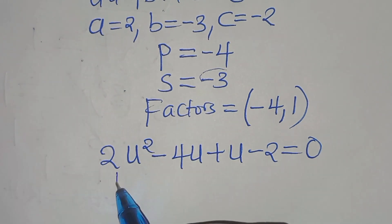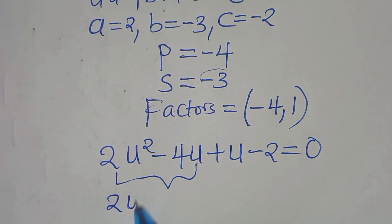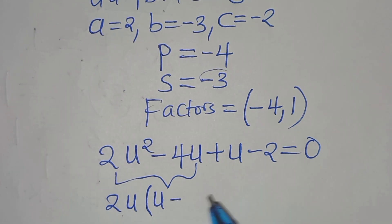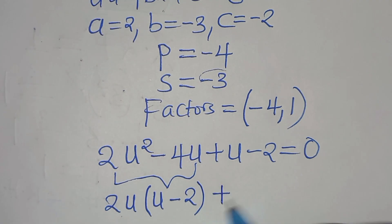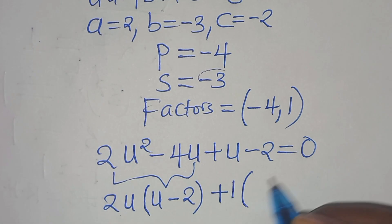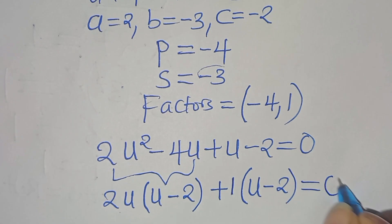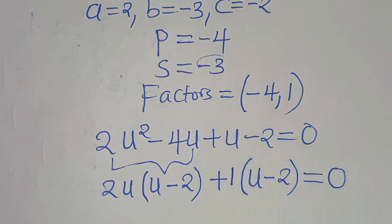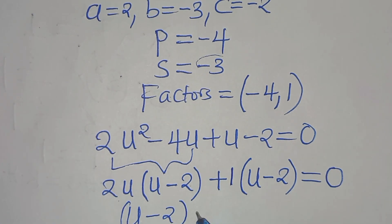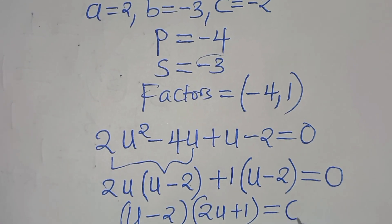From the first part, 2u is common, so we factor out 2u to get 2u(u minus 2). In the second part, 1 is common, giving 1(u minus 2). So we have (u minus 2)(2u plus 1), equals 0.